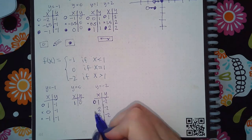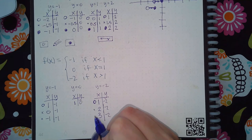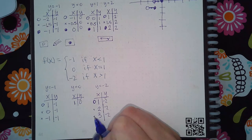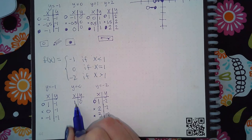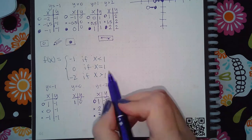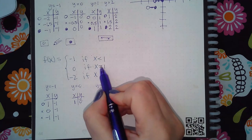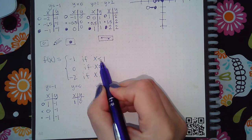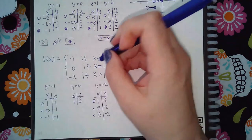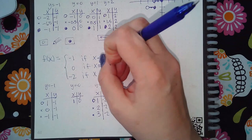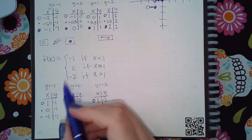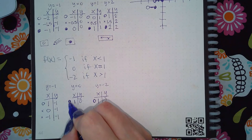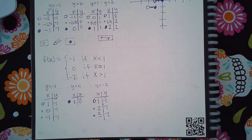For the middle section with x = 1, it does say equals, so that point should be a solid dot. The zero points in the other sections are regular points because those endpoints were already accounted for separately.